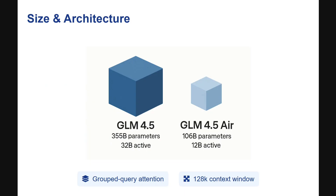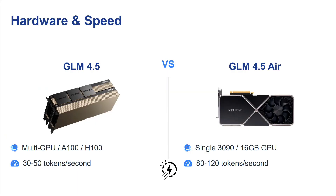Here comes the biggest difference in size and architecture. GLM 4.5 is about 355 billion parameters with about 32 billion active parameters, while GLM 4.5 Air is about one third the size, with active parameters also about one third. However, once you see the benchmarks, you'll find the difference is quite minor.